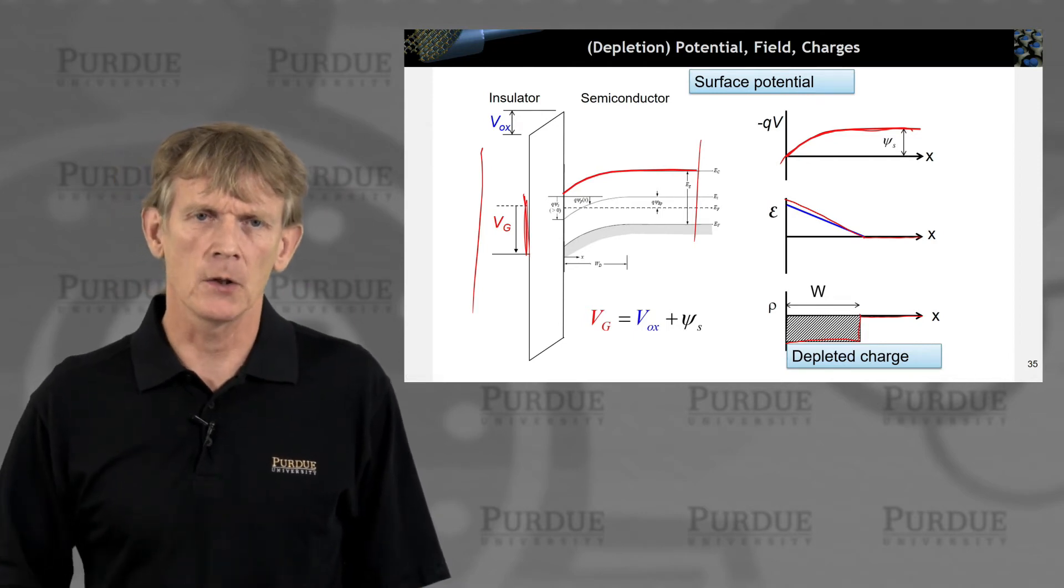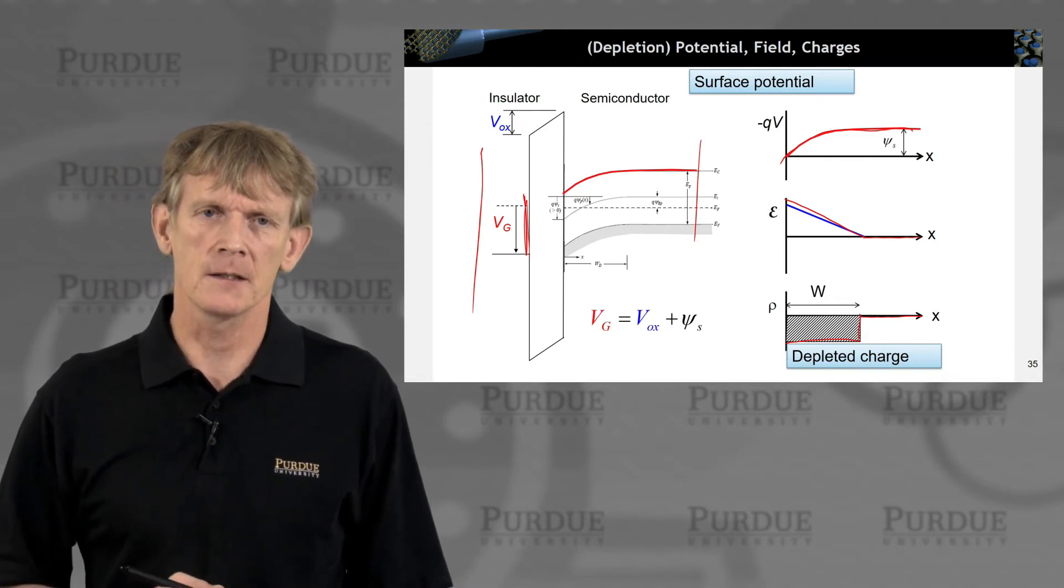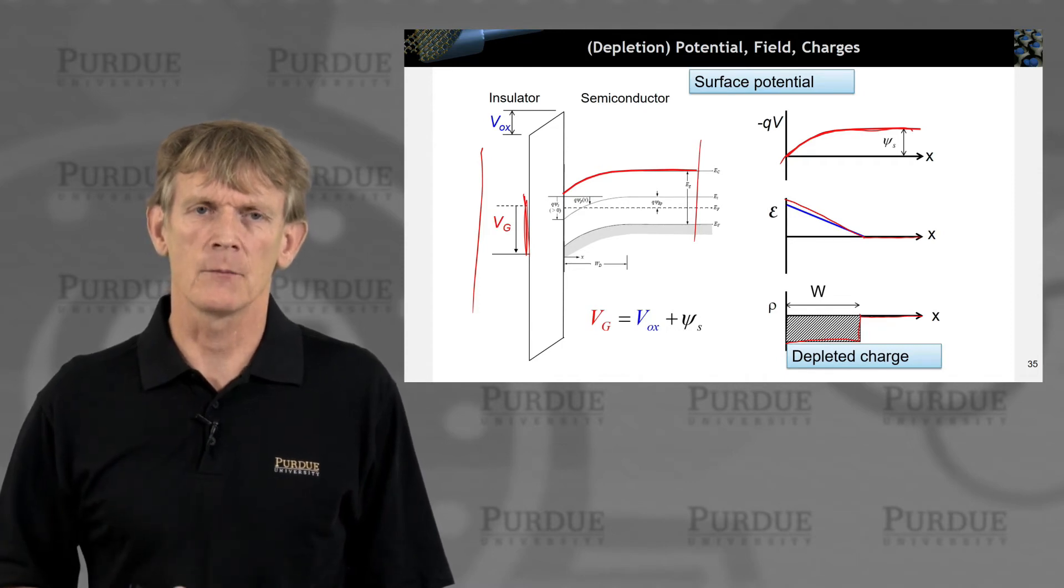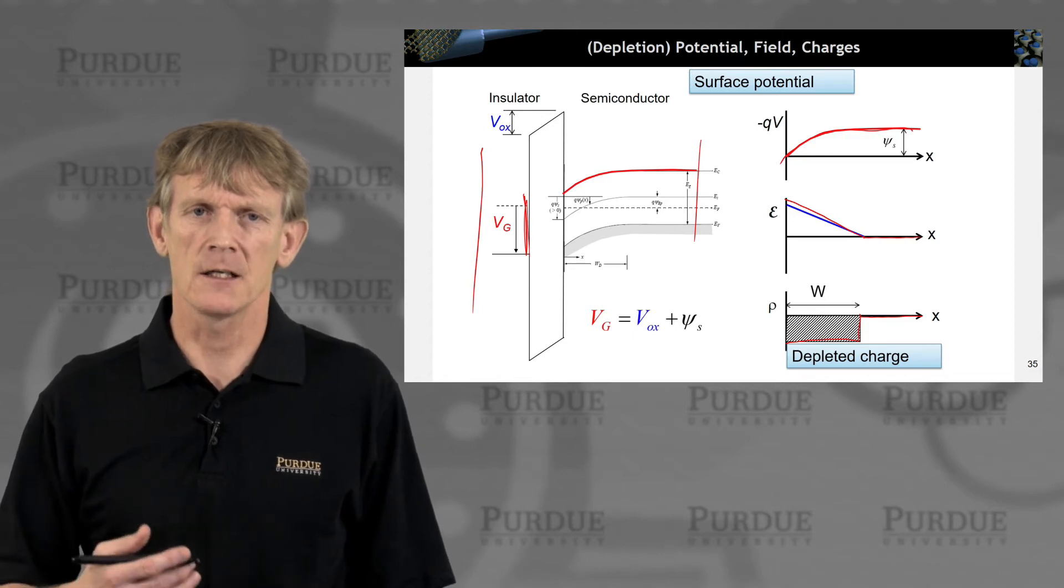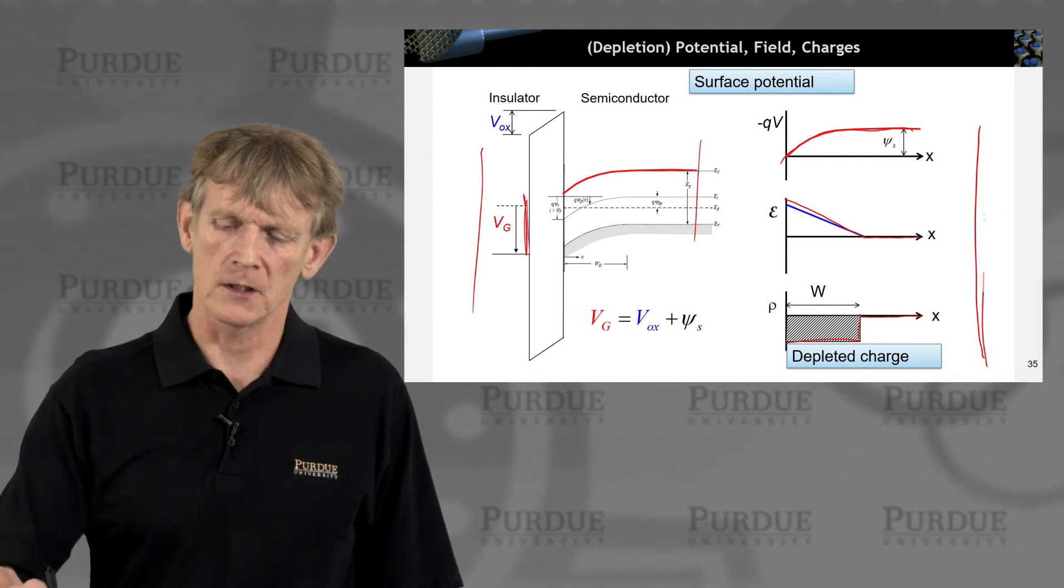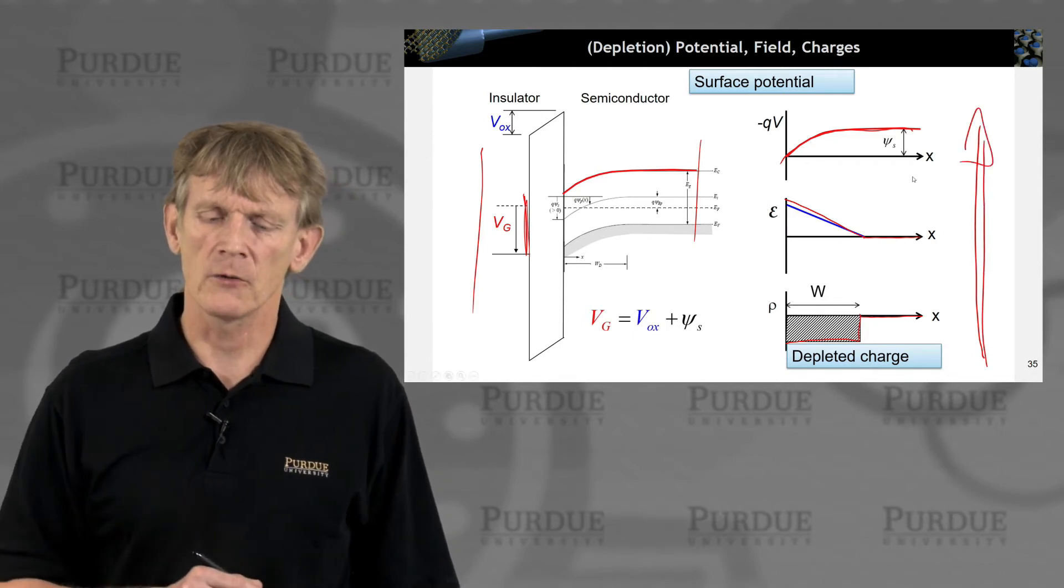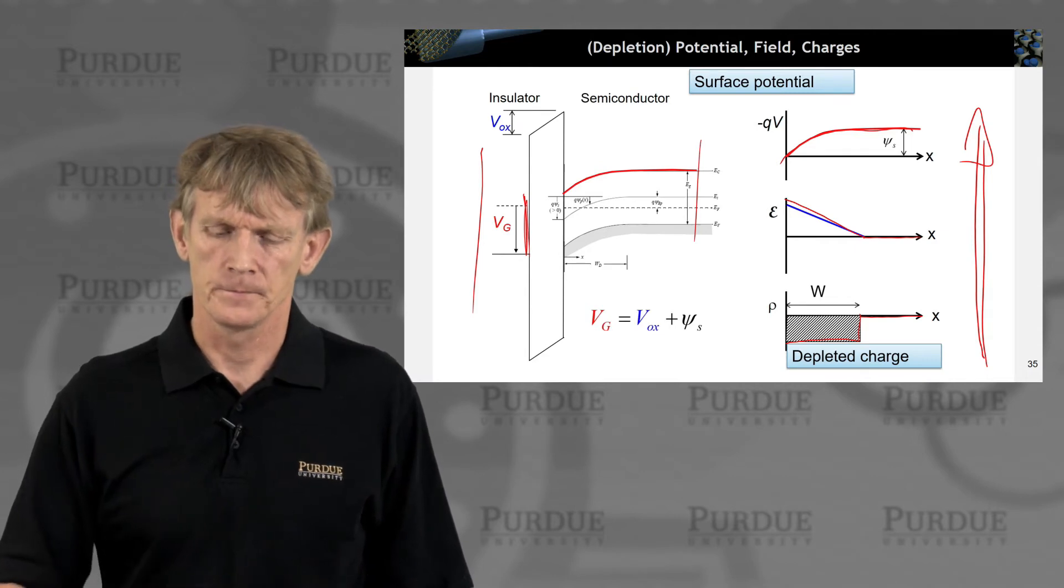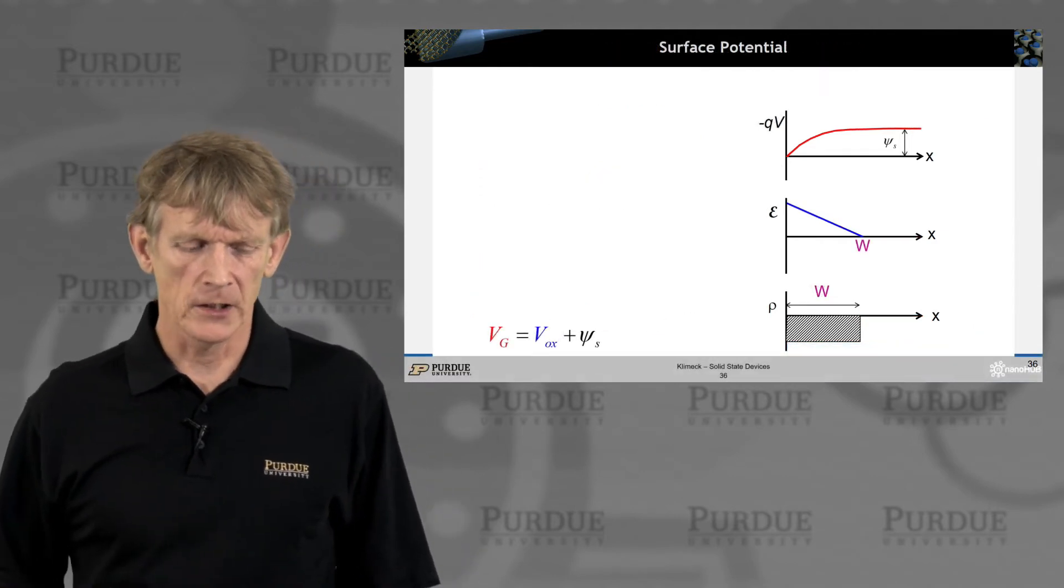And this is very similar to all the calculations we've done to a PN junction. It's the same depleted charge region, but the mechanism on how we depleted it is different. But the calculation of charge, et cetera, is the same. And we'll do, again, the same thing. We start from charge, go integrate to electric field, and then to potential. So let's do that.